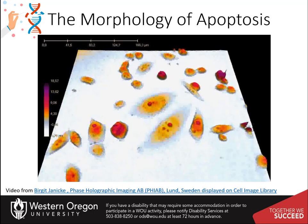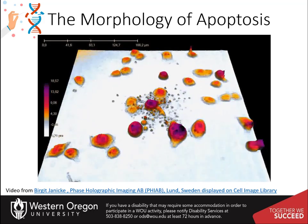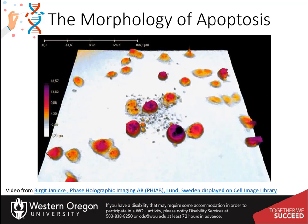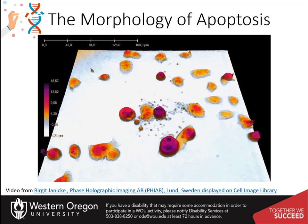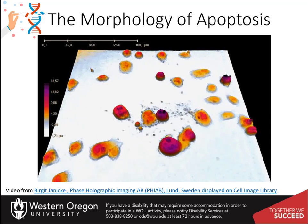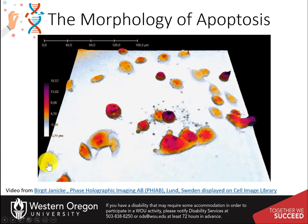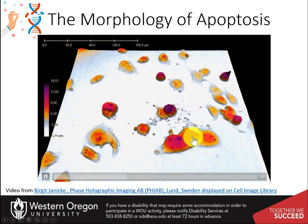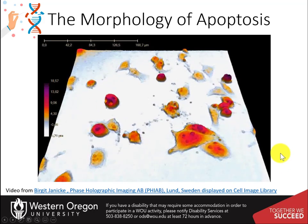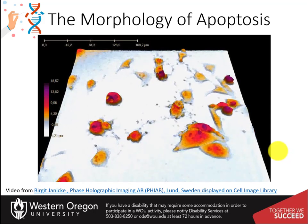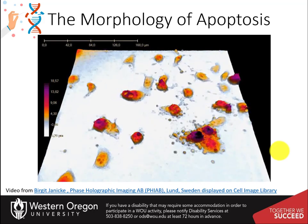A time-lapse series using digital holographic microscopy is presented as a movie. The movie shows living human prostate cancer cells, DU145, induced to undergo apoptosis following treatment with etoposide, a cancer treatment. The images were created by phase holographic imaging, AB, in Lund, Sweden. Notice that when a cell is about to undergo apoptosis, it appears to implode on itself and then break apart into smaller blebs.